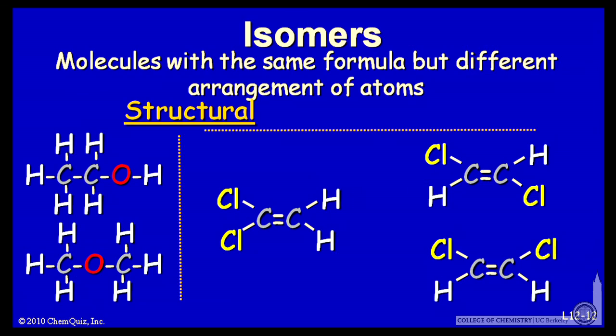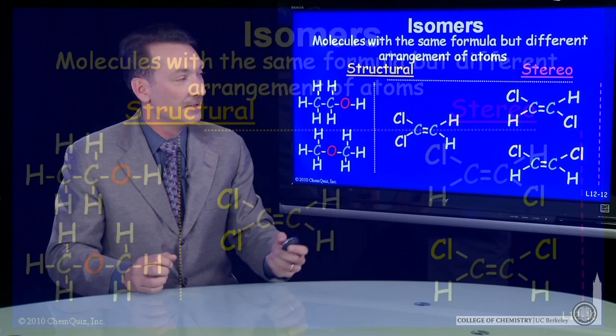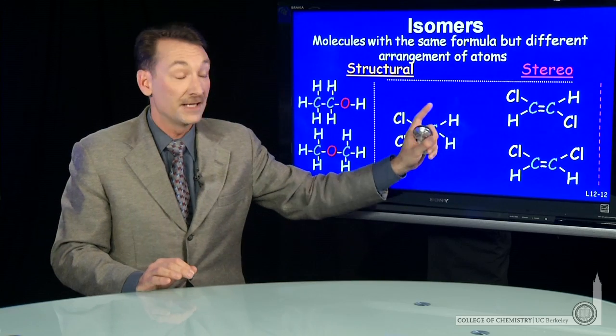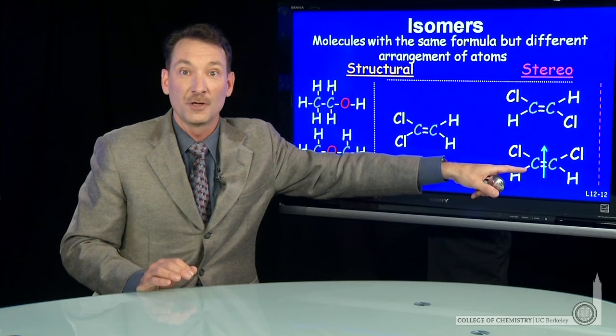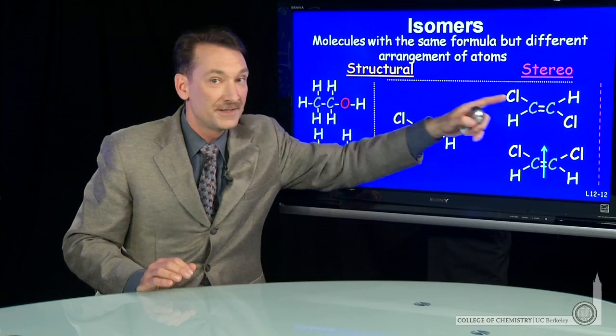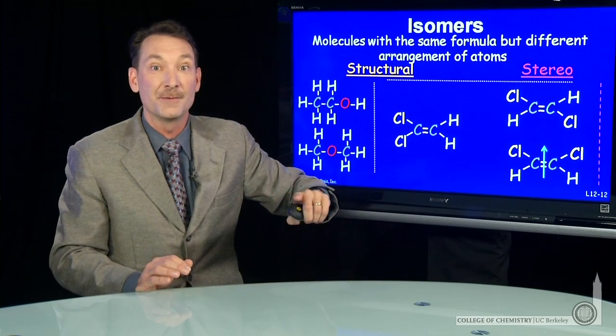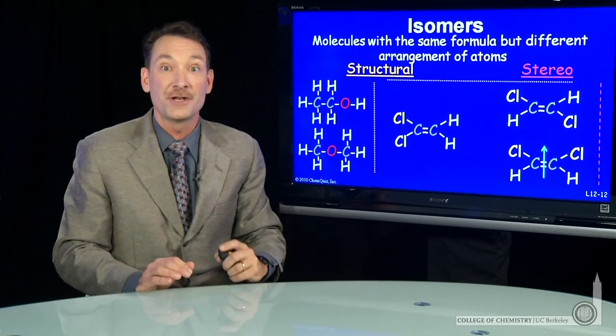This orientational change leads to stereoisomerism. These molecules generally have more similar properties than structural isomers, but these two in particular have at least one very different property. This molecule will have a permanent dipole moment, where symmetry will cancel the bond dipoles in this molecule and have no dipole moment.